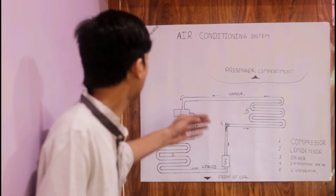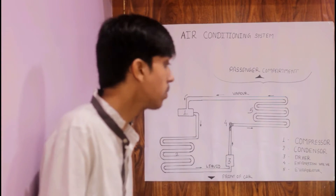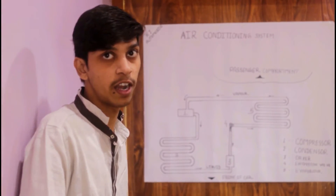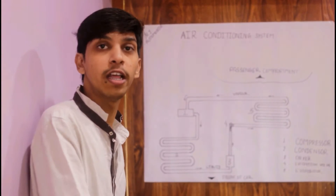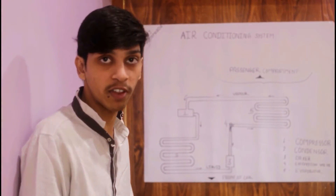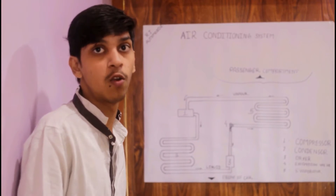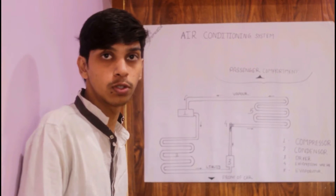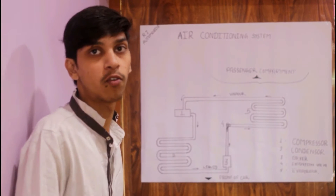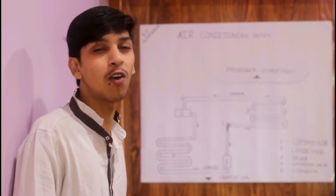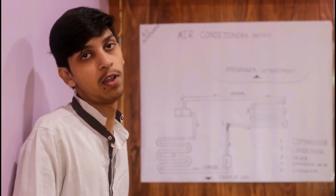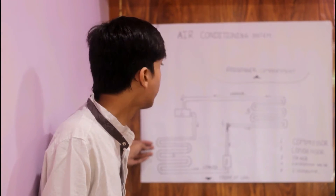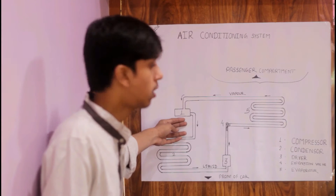Then the refrigerant goes to the condenser, where a phase change takes place. You can have a look — the condenser is situated in front of the radiator at the front of the car for proper cooling. Behind the condenser, a fan is also used to suck in a high amount of air from the atmosphere for proper cooling. Nowadays we are using the best electronic fan drive for the cooling.